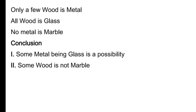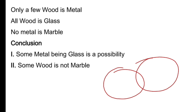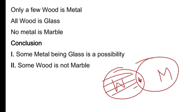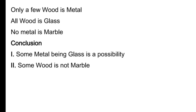'Only a few wood is metal' ka matlab hai: ye wood hai, ye metal hai — iska kuch hi part metal hai, sirf ye wala part. Idhar wala part bilkul nahi ho sakta. Toh 'only a few wood is metal' ka thoda sa matlab — agar aap samjhenge toh matlab ye hai ki 'all wood is not metal.' Sirf kuch hi wood metal hai — woh part jahan dono overlap karte hain.